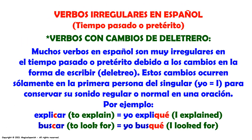Verbos irregulares en español — tiempo pasado o pretérito. Verbos con cambio de deletreo. Muchos verbos en español son muy irregulares en el tiempo pasado o pretérito debido a los cambios en la forma de escribir o deletreo. Estos cambios ocurren solamente en la primera persona del singular — yo, I — para conservar su sonido regular o normal en una oración. Por ejemplo: explicar, to explain — yo expliqué, I explained. Buscar, to look for — yo busqué, I looked for.